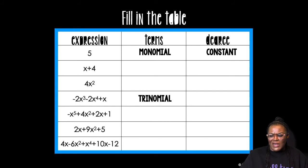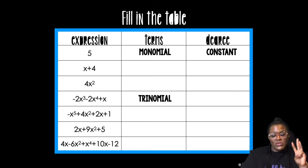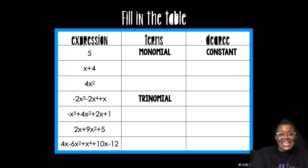So we jumped around. So this one has three terms. I have the 2x cubed, the 2x to the 4th, and then the x. That's a trinomial because it has three terms. And what is the degree? Remember, the degree is the highest exponent. So we're going to say it's a degree 4, but I'm going to use the fancy term, which is quartic.